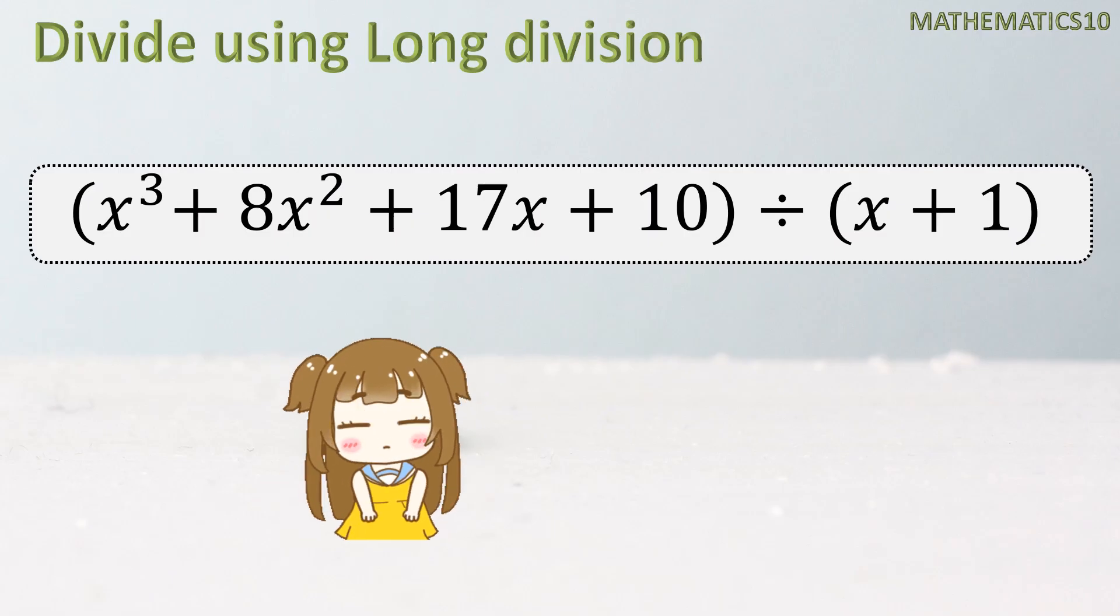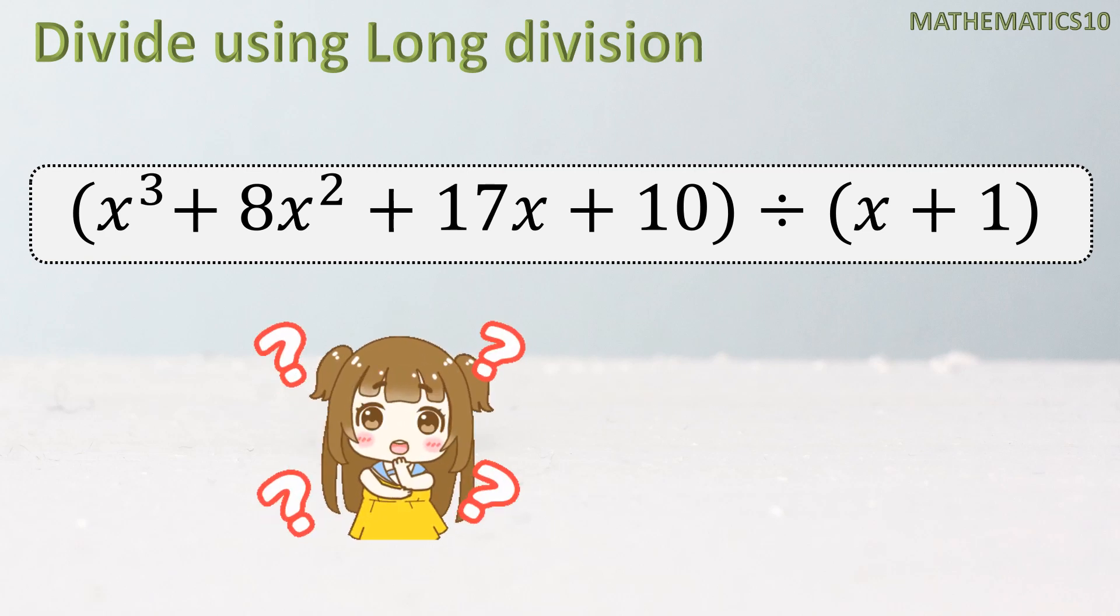Long division. First, divide using long division. Our polynomial is x³ + 8x² + 17x + 10 divided by x + 1.